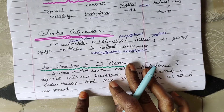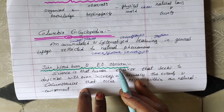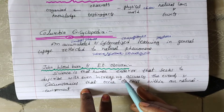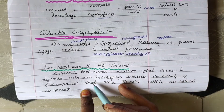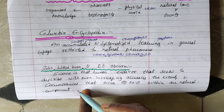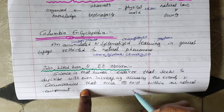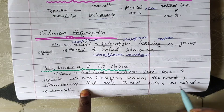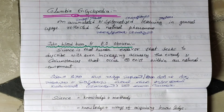This is John Woodburn and Evo Abun's definition. Science is that human endeavor that seeks to describe with ever-increasing accuracy the events and circumstances that occur or exist within our natural environment. So, this is simple.